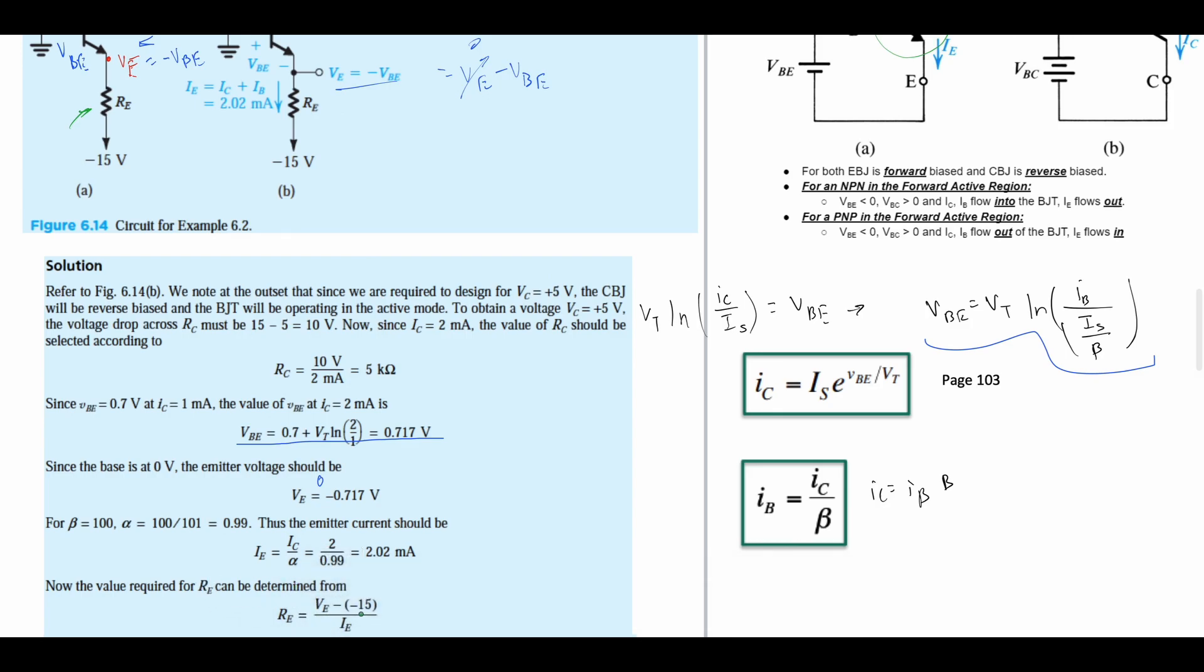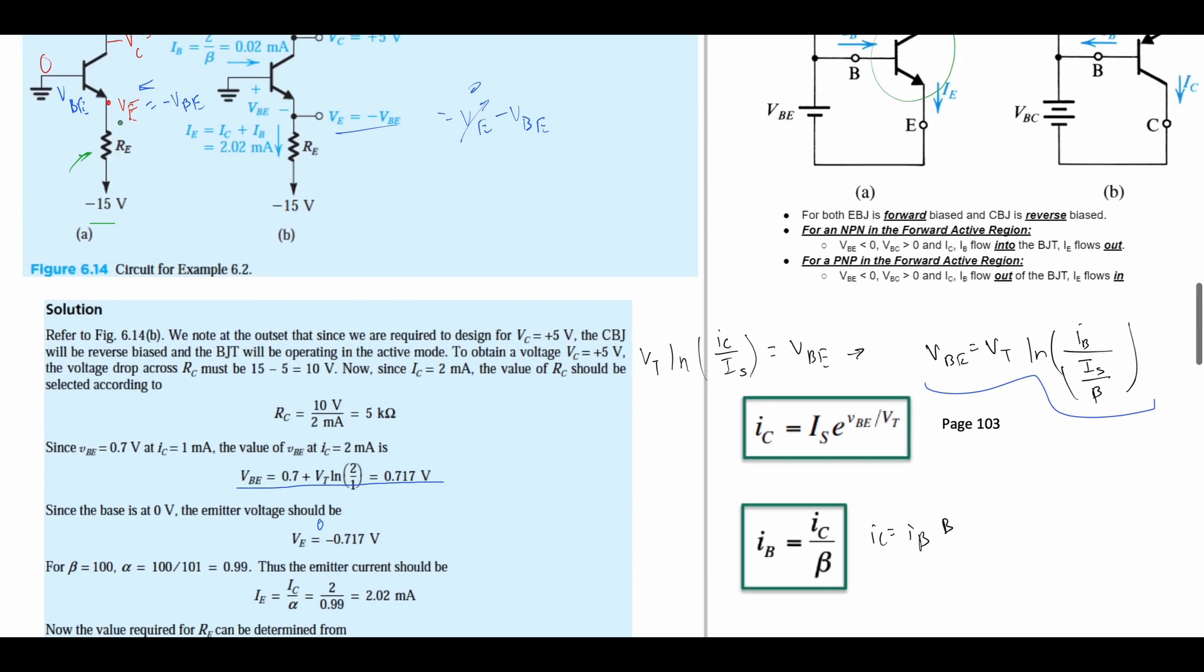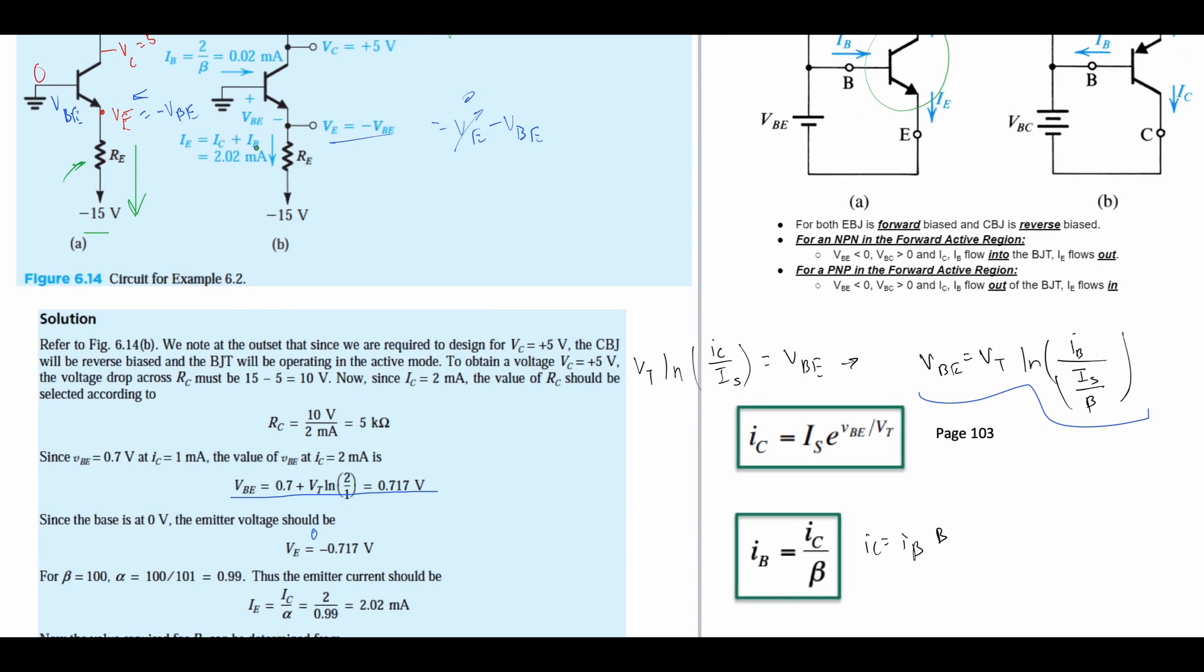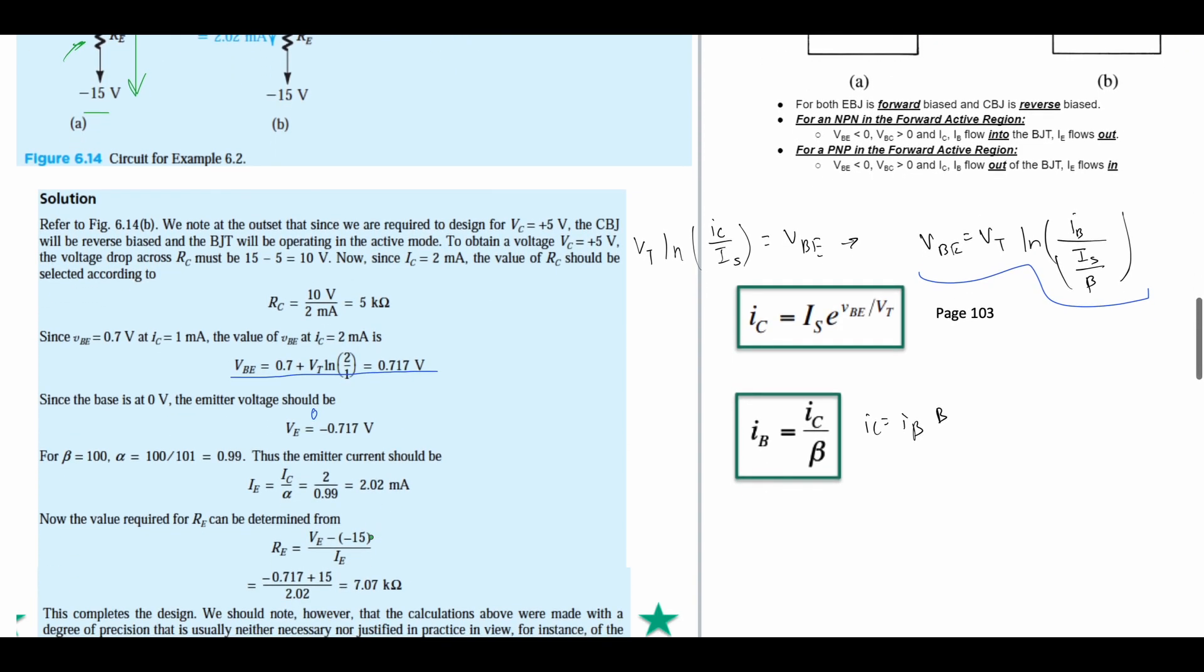We have the emitter minus the negative 15, which is the output voltage here, and it's over our IE. Obviously we have some current flowing through here. Our IE is equal to IC plus IB. That's in the formula as well on page 103, and that's going to be the 2.02 milliamps we just found.